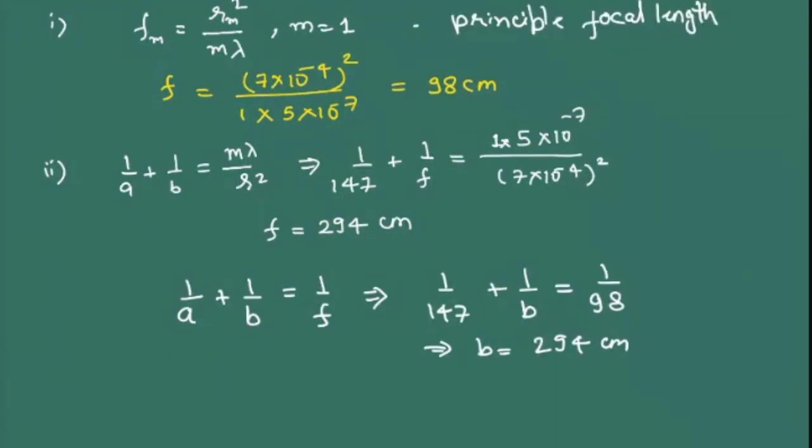What we calculated in the first part is basically principal focal length of zone plate. This is called the principal focal length. What is the meaning of principal focal length? If you have light coming from infinity and where it will be focused, that we take as focal length. If you use this equation, still it will give you the same result.